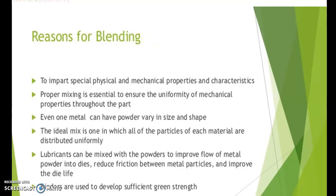Many combinations of metals with ceramics or other materials that cannot be used as melting alloys can be made possible. The mixing may be done either in wet or dry condition, and an efficient mixer is used to produce a homogeneous mixture. The blending reasons are to impart special physical and mechanical properties and characteristics. Proper mixing is essential to ensure the uniformity of mechanical properties throughout the part. Even one metal can have powder varying in size and shape, and the ideal mix is one in which all the particles of each material are distributed uniformly. Lubricants can be mixed with the powders to improve the flow of metal powder into dies, reducing friction between the metal particles and improving the die life.